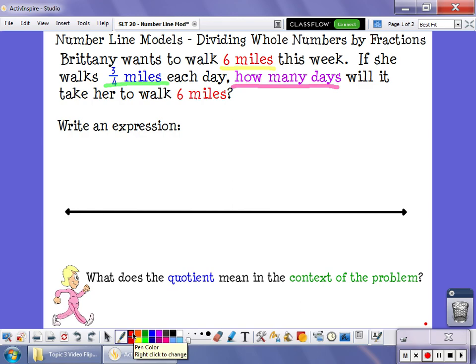Well, the expression we're trying to solve here is we know that she wants to walk a total of six miles. But she's not going to do that all at once. She's going to break that six miles up into groups that are three-fourths of a mile long because every day she's going to walk three-fourths of a mile. The question we're trying to answer is how many groups of three-fourths are inside six whole miles?